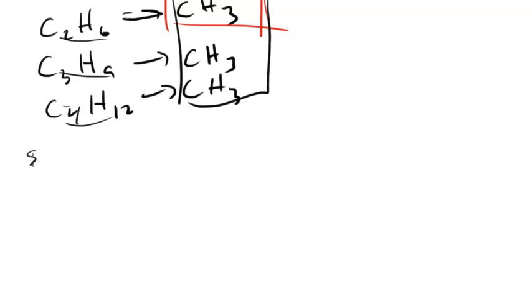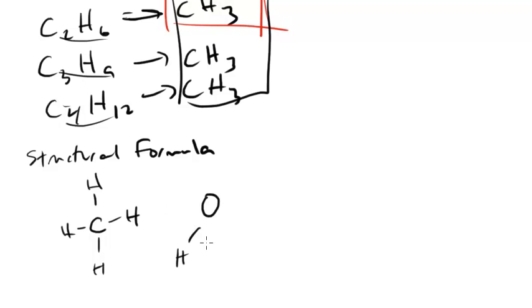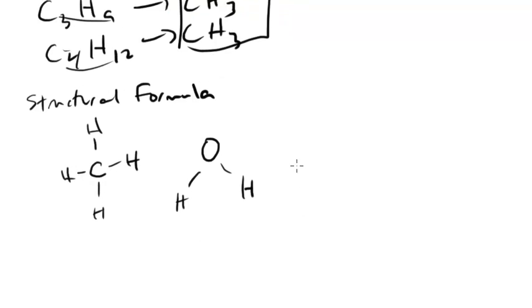Finally, the second one that's very important to know is the structural formula. This is going to be something like you would recognize in chemistry, so something like methane. This would show the actual way the atoms are connected in the compound, and also may show the shape if you draw it a particular way. Another example would be water. This shows not only the composition, but also shows the structure. So it's essentially a molecular formula with structure added in.